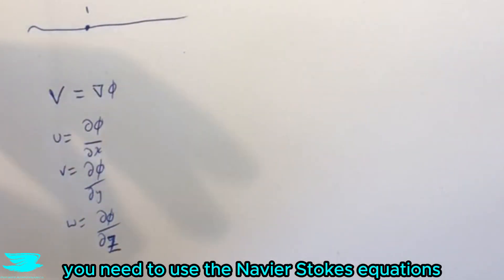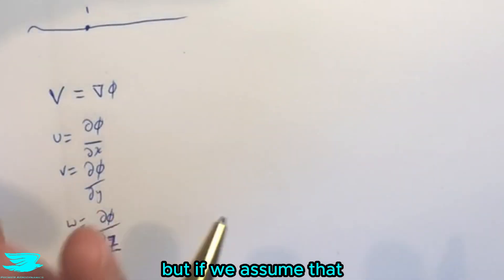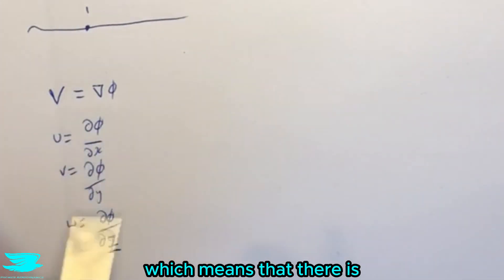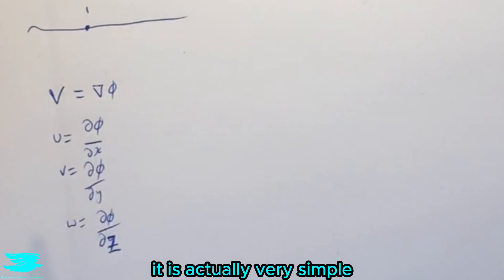Well, in a regular flow which has viscosity and is not irrotational, then it's a bit more difficult. You need to use the Navier-Stokes equations, but if we assume that the flow is irrotational, which means that there is no vorticity in it, then it is actually very simple. We use the velocity potential.